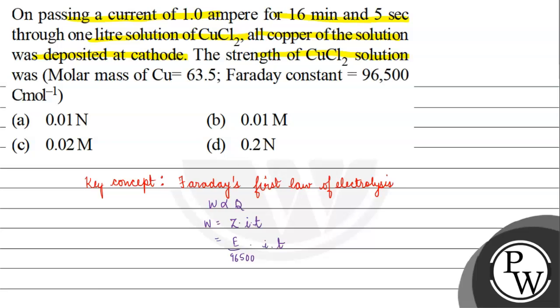We are told what is the current. The current value given is 1 ampere, and the time given is 16 minute 5 second.